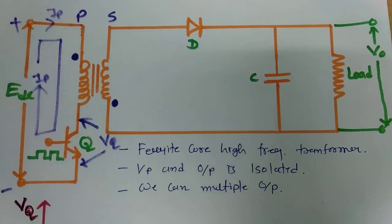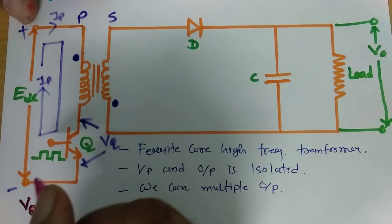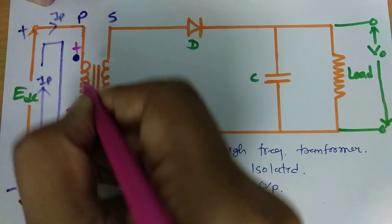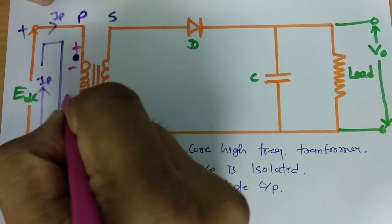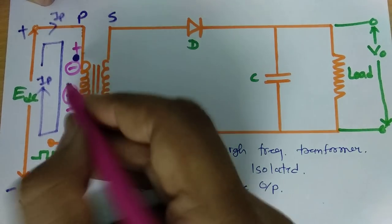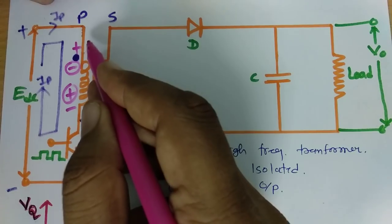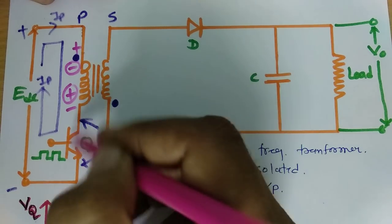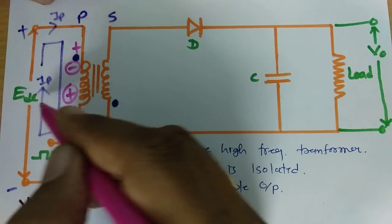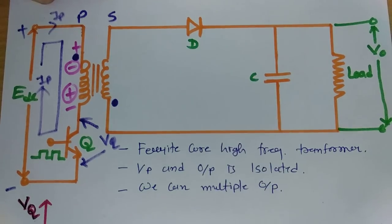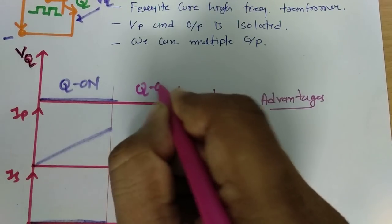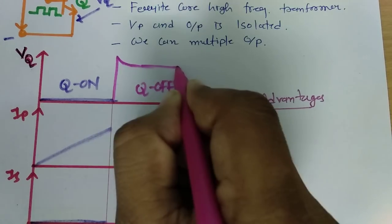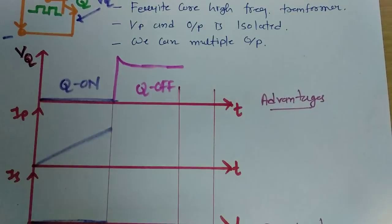In Mode 2, the switch is off. The polarity of the inductor voltage will change — from plus-minus to minus-plus. When the switch is off, the voltage across the switch VQ will be almost twice EDC. There will be a small spike due to the inductance of the transformer.